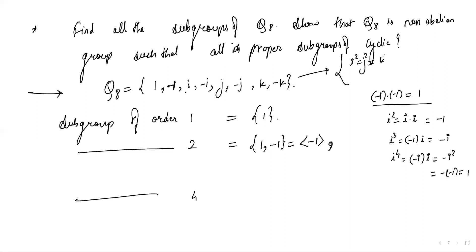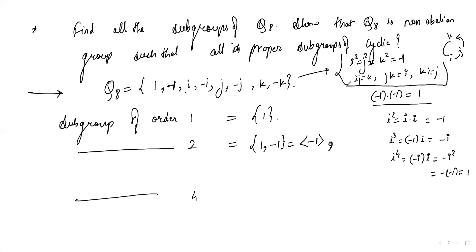Within Q8 we have these rules: i² = j² = k² = -1, and ij = k, jk = i, ki = j.